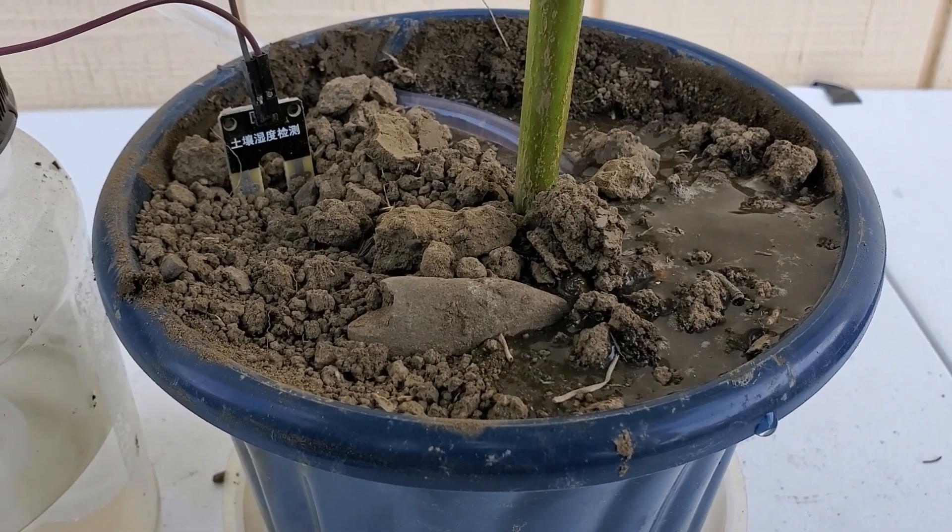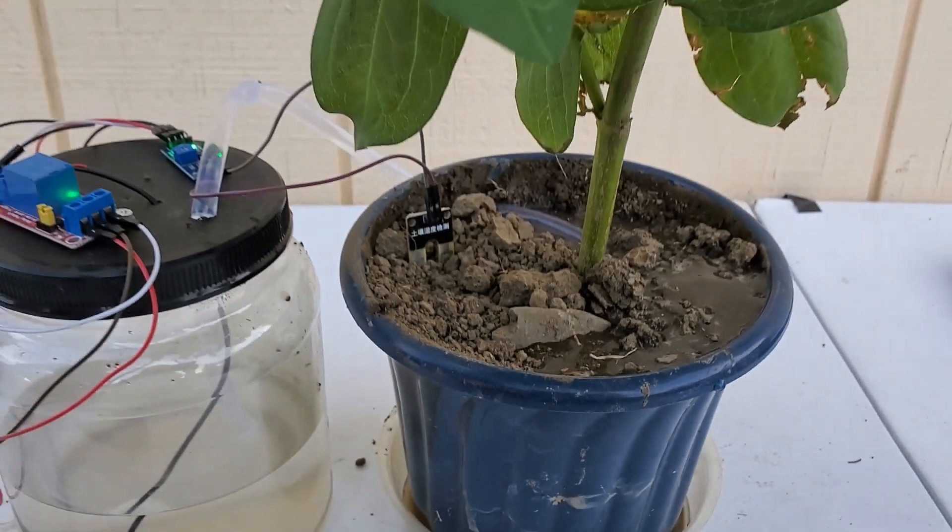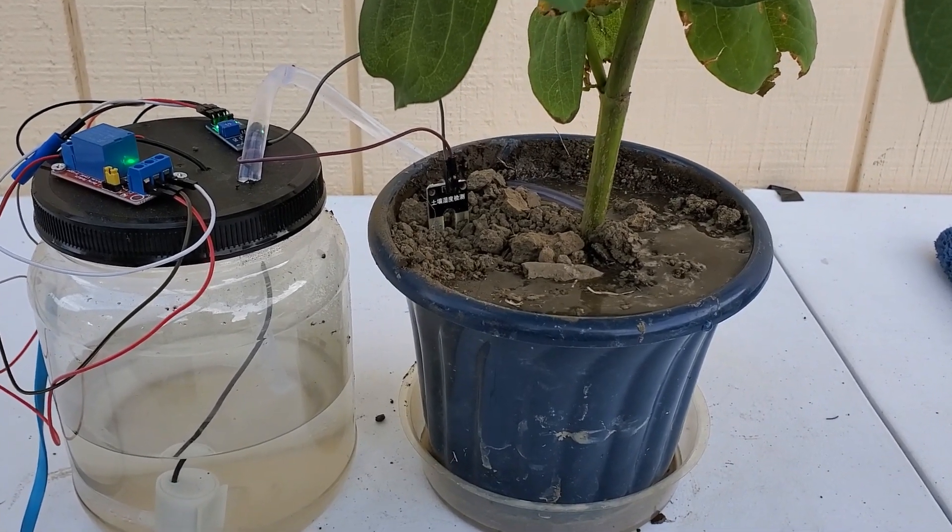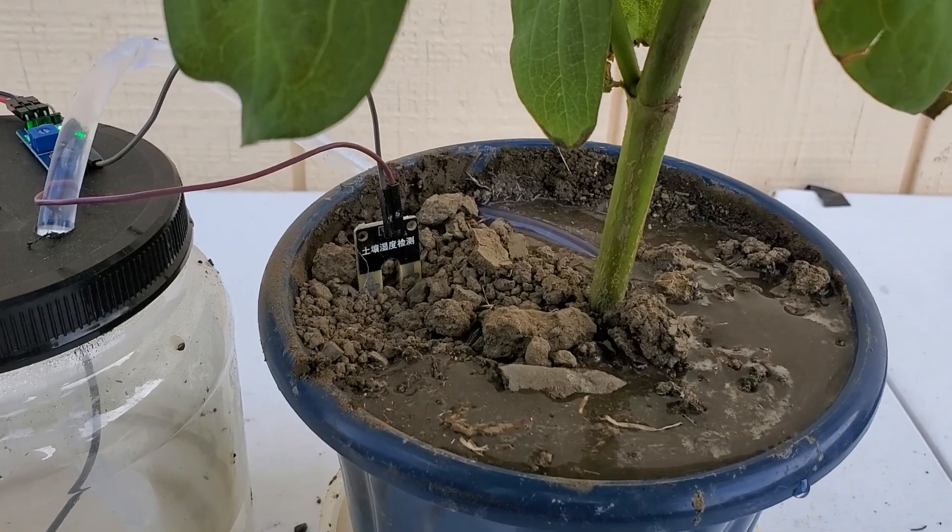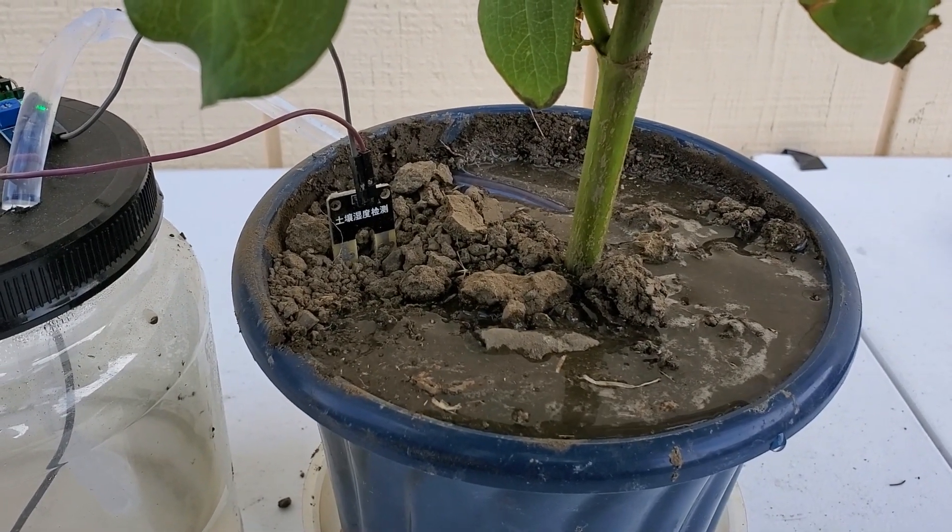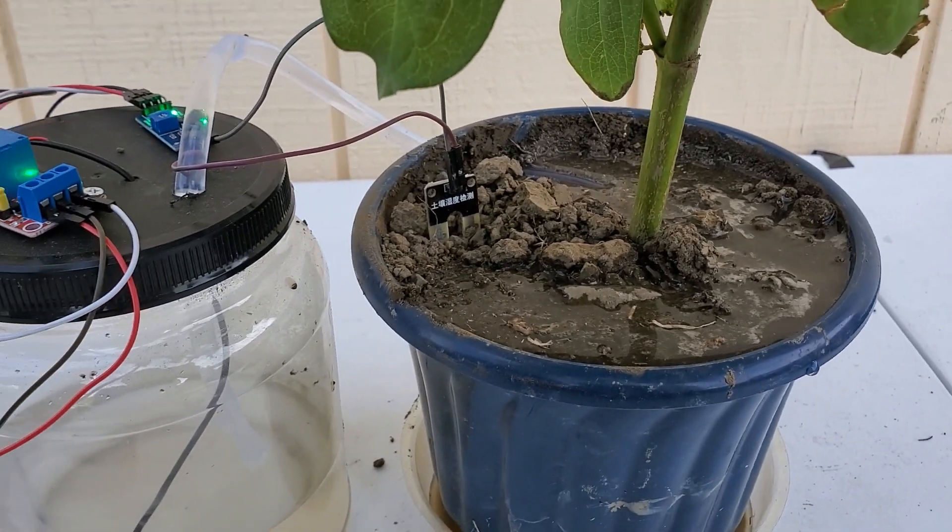That's it. We're all done. The water will begin to fill up the pot, and once it saturates the sensor it will turn off the pump. You may have to adjust the position of the sensor and the position of the tubing to get the desired saturation level.